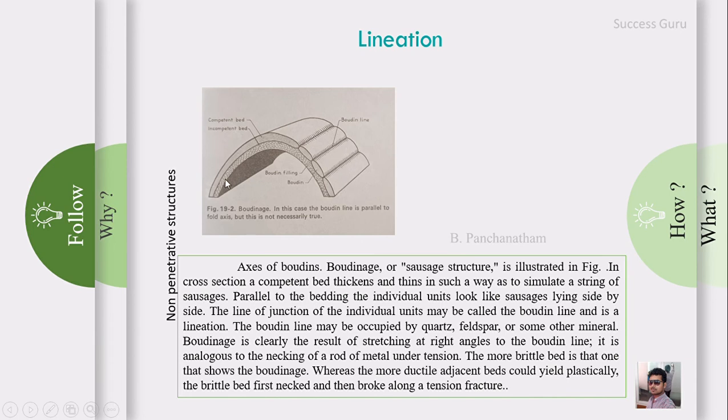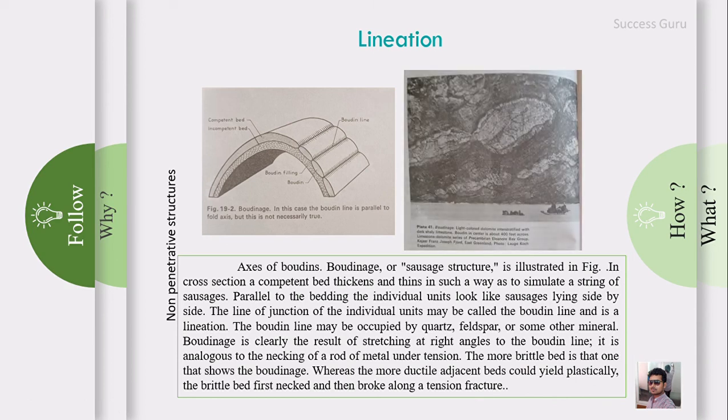The boudin line may be occupied by quartz, feldspar, or some other minerals. Boudinage is clearly the result of stretching at right angles to the boudin line. If this is the boudin line, the stress direction is perpendicular to this line. The more brittle bed shows boudinage, whereas the more ductile adjacent bed yields plastically. The brittle bed first necks and then breaks along tension fractures. The size of boudins may range from very small to even up to 400 feet across with equivalent diameter.